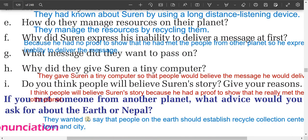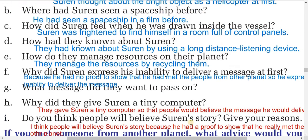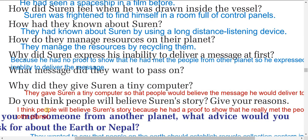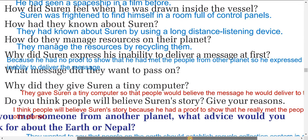G: What message did they want to pass on? They wanted to say that people on Earth should establish recycling collection centers in every town and city. H: Why did they give the student a tiny computer? They gave the student a tiny computer so that people would believe the message he would deliver to them — as proof.